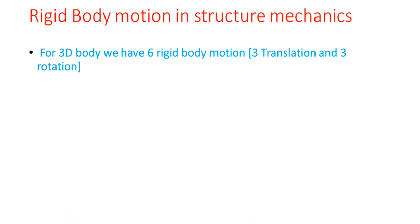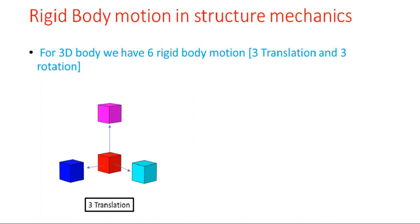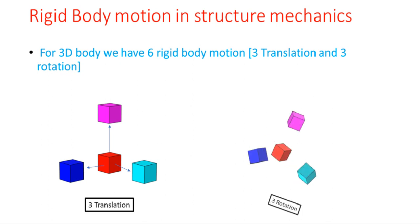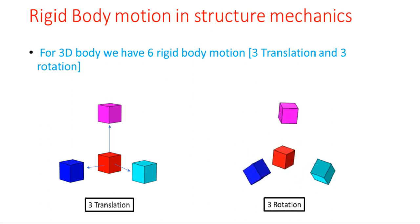For a 3D body, we have six rigid body motions — three translations and three rotations. For example, take a block: you can translate it in x, y, or z direction, and similarly you can rotate it about the x axis, about the y axis, or about the z axis.